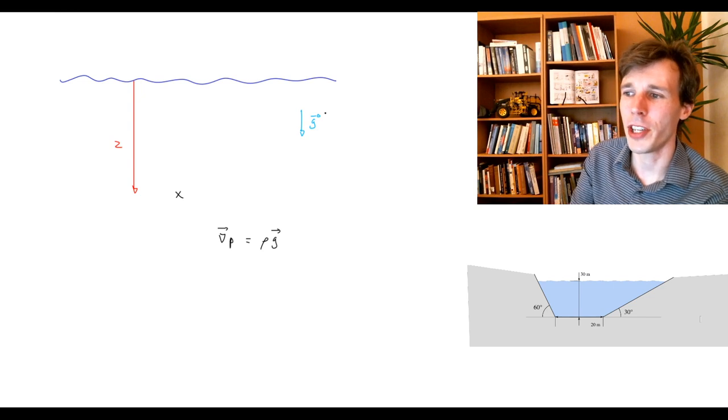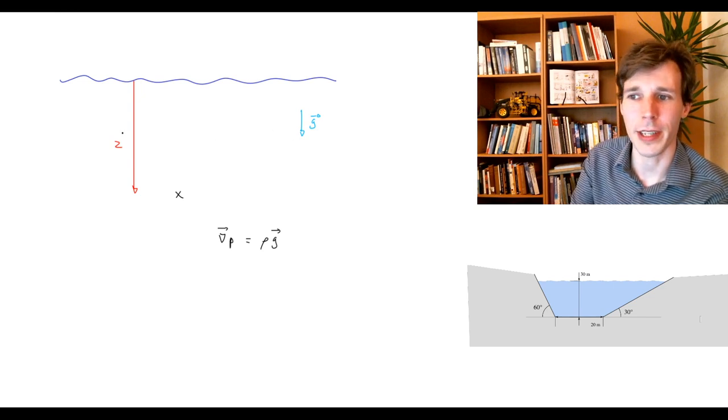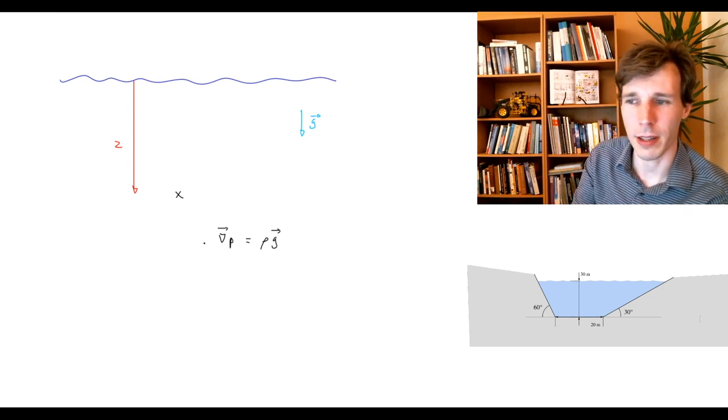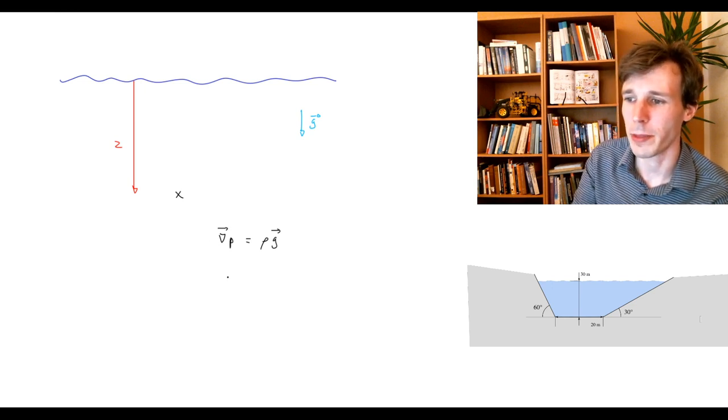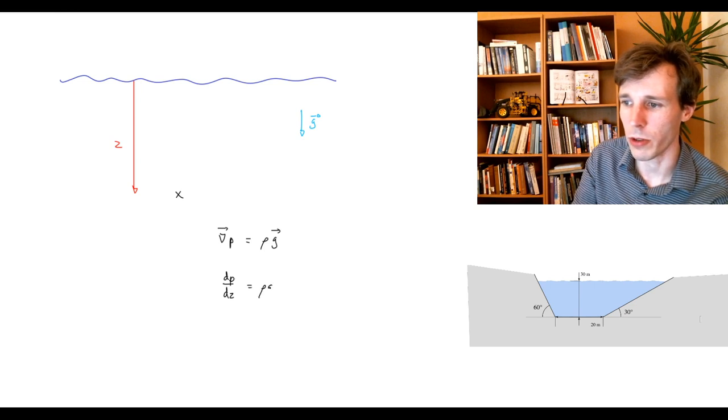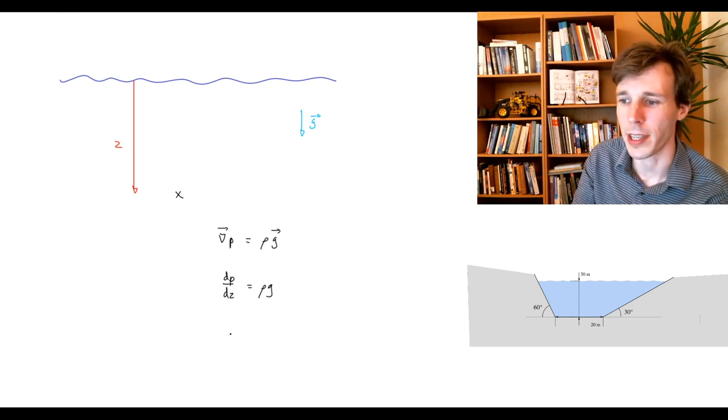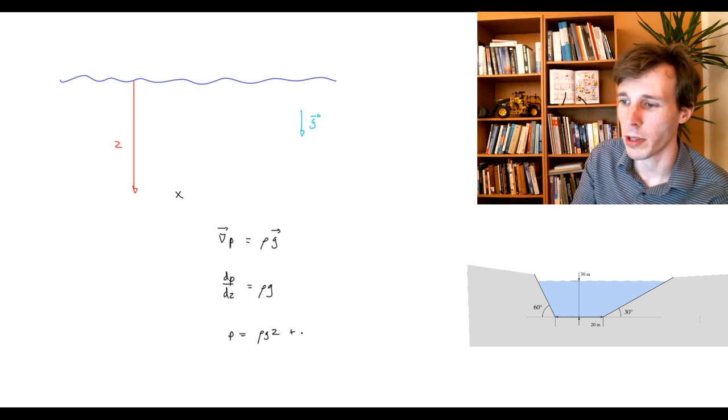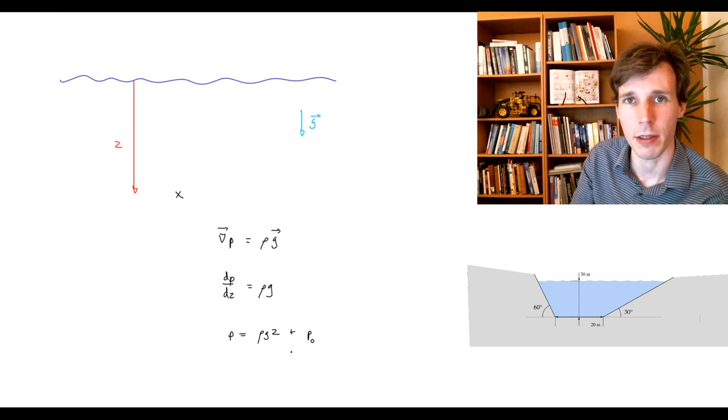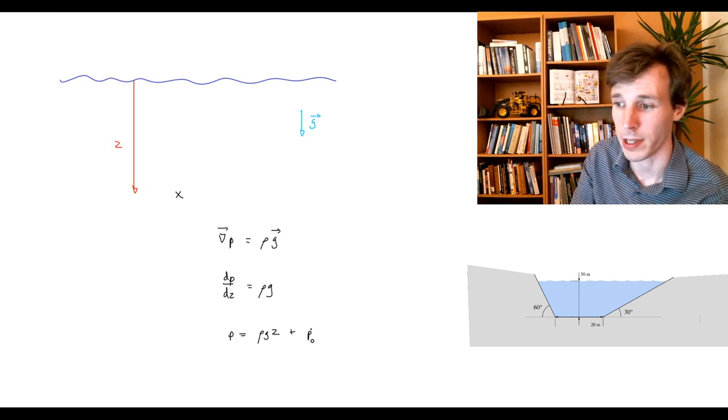And if G here is aligned with Z, then you can just take this 3D equation and have it in only one direction, and this becomes dP over dZ is ρG, like so. If dP/dZ is ρG, then you can integrate and say P is ρGZ plus whatever value you start at Z equals zero.